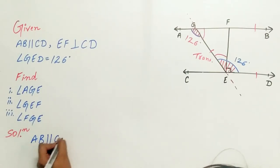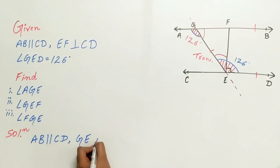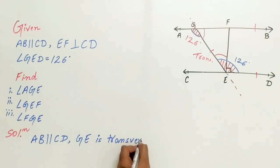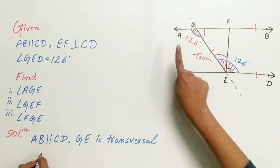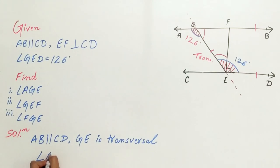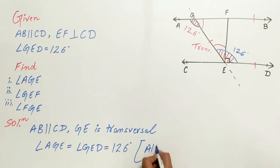AB is parallel to CD, and GE is a transversal. Hence, angle AGE is equal to angle GED, that is 126 degrees, because alternate interior angles are equal.